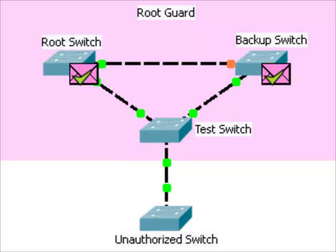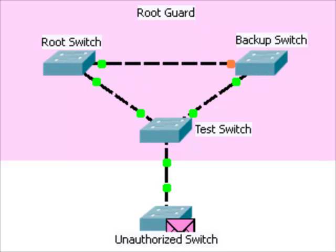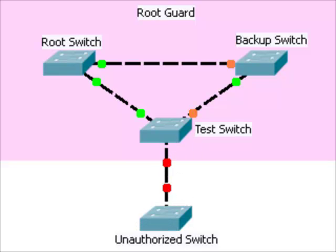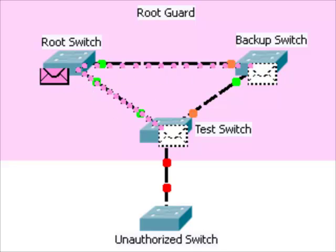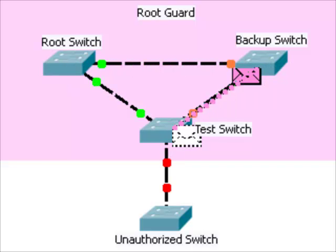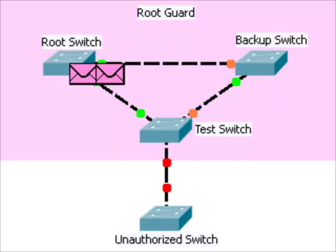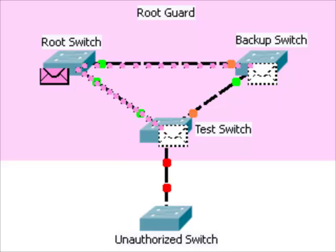Let's set up root guard on all the test switch's ports that should never have other switches connected to them. Now, if we connect the unauthorized switch to the test switch, its ports will go into the root inconsistent state. The unauthorized switch can no longer change the spanning tree topology.